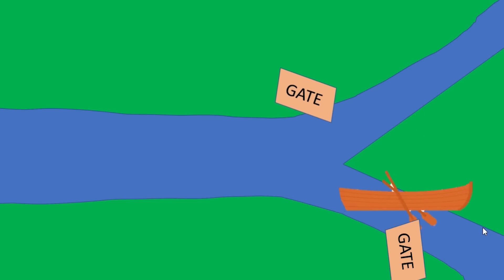In this case ribosomal DNA silencing or heme biogenesis, both of which are signs of aging in these cells. Now one example of an oscillator in biological systems is a delayed negative feedback loop. Let's explain.